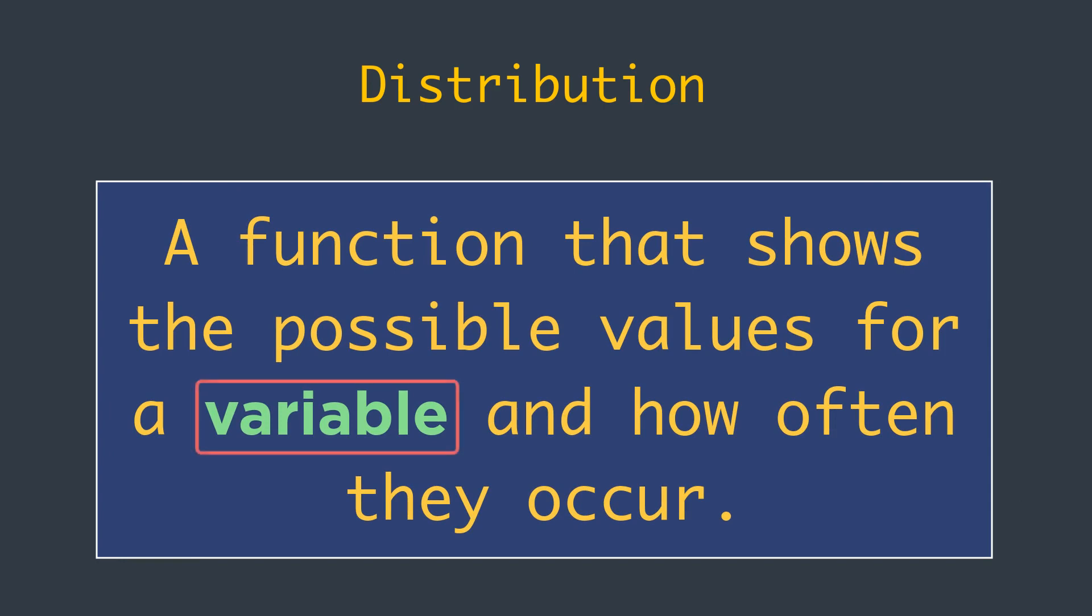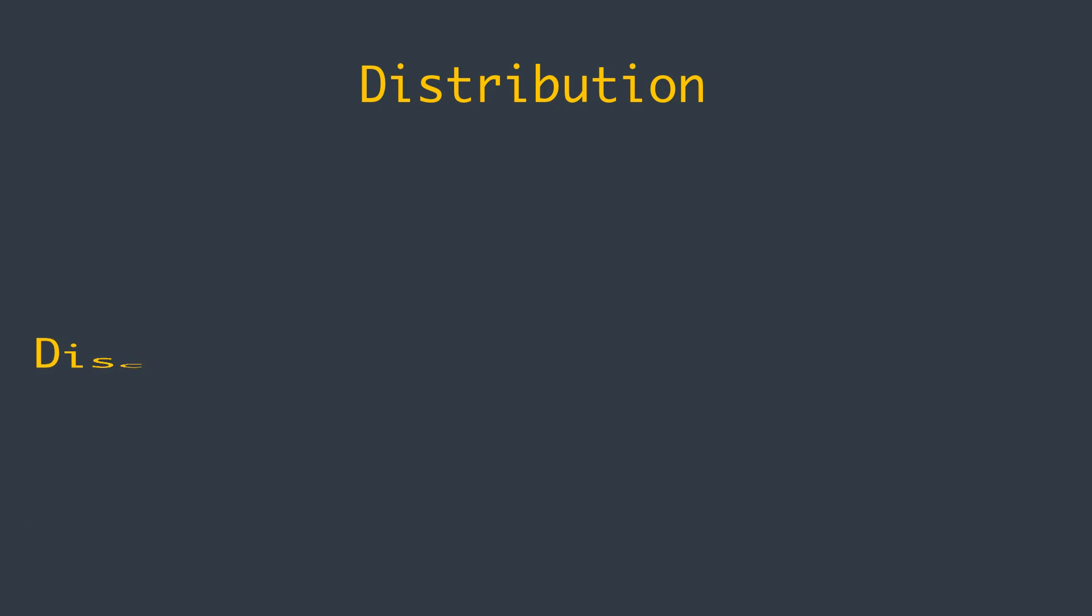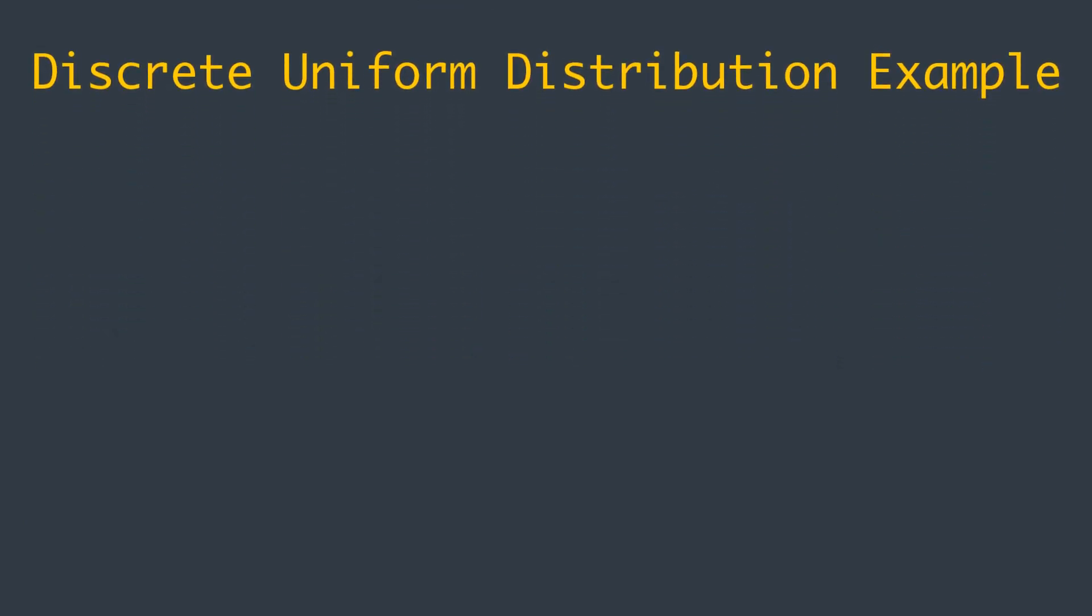Keep in mind this is the random variable we just talked about. Let's understand the example I mentioned above. First one is discrete uniform distribution. Think about a fair die.